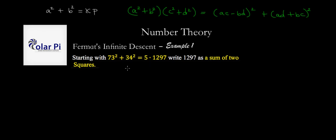So how do we do this? First notice that our given equation here can be written as 73 squared plus 34 squared is equal to the 5, we can write as 1 squared plus 2 squared, and then times 1297.